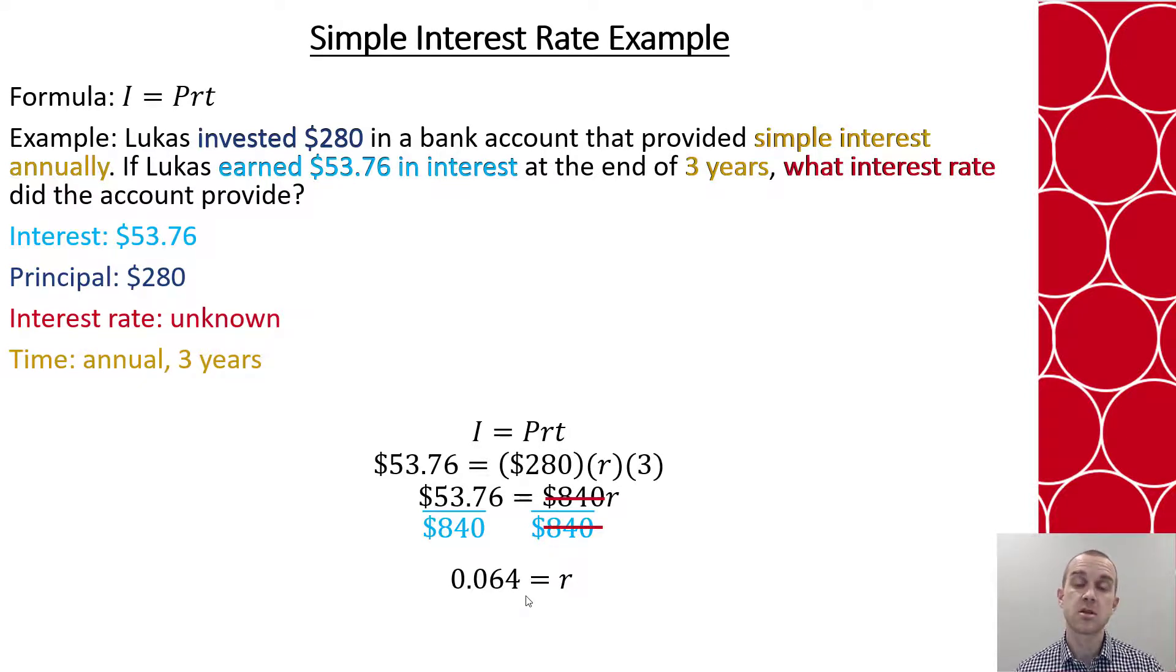But often we report rates as a percent. So when we go from the decimal to the percent, remember we go the other way. We multiply now by 100. So we would say that the account provided Lucas a 6.4% interest rate.